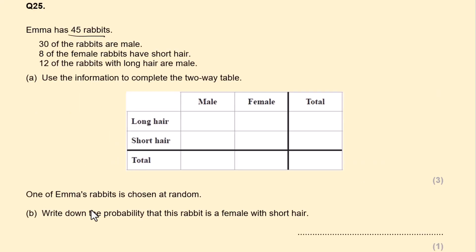Emma has 45 rabbits. So total 45. 30 of the rabbits are male. So male, total male are 30. 8 of the female rabbits have short hair. So female short hair is 8. And 12 of the rabbits with long hair are male. So long hair, male, 12.